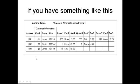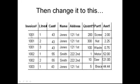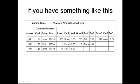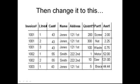So instead of having that table we should have invoice 1001 repeated, and we should have all the parts, all the quantities, all the amounts for each invoice. We used to have 1001 with three parts — screw, nut, and washer. 1002 has two products, motor and brace. But now for each row we have one part, one product.